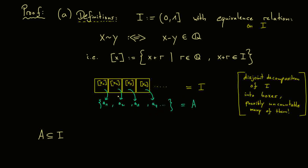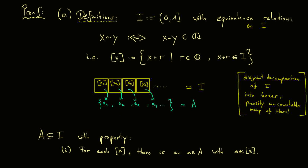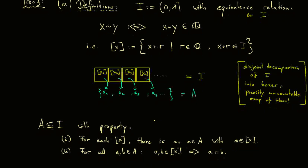Keep in mind that if we have uncountably many boxes, the picture is not the correct way to represent this, and therefore we need a formal definition for our set A. The first property is that for each equivalence class x, I find such an a in A — meaning picking out one element from the box. The second property tells us this element is unique, so I only choose one element of each box: for all a, b in A, if a and b come from the same equivalence class, we can imply a equals b. Hence the set A has exactly one representative out of each equivalence class.